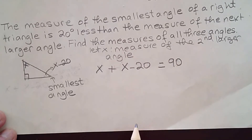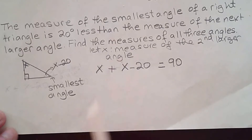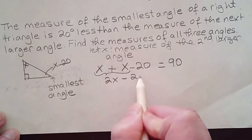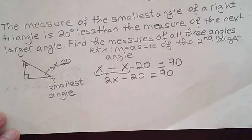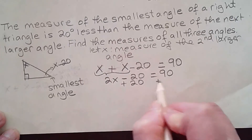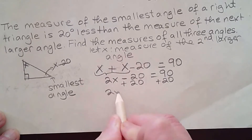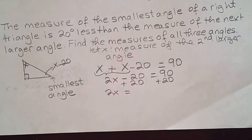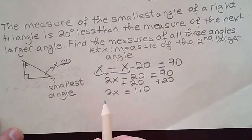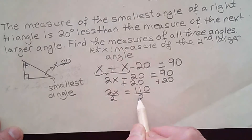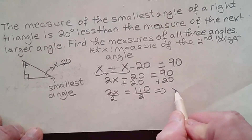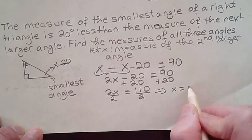Now I can go ahead and solve for X, and I will get the measure of the second larger angle. Combining like terms and adding the X's, I get 2X minus 20 equal to 90. Then add 20 on both sides, and we get 2X equal to 110. To isolate X, divide by 2 on both sides, and that gives me X equals 55 degrees.